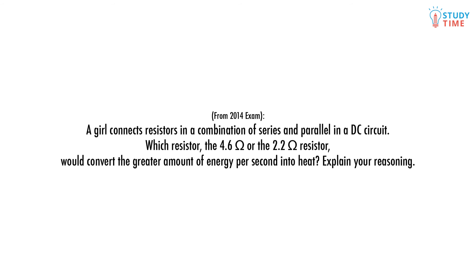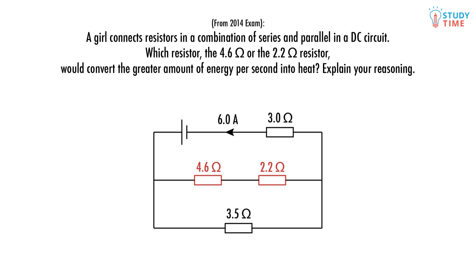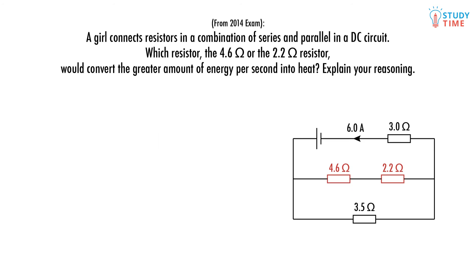A girl connects resistors in a combination of series and parallel in a DC circuit. Which resistor — the 4.6 ohm or the 2.2 ohm resistor — will convert the greater amount of energy per second into heat? Explain your reasoning.